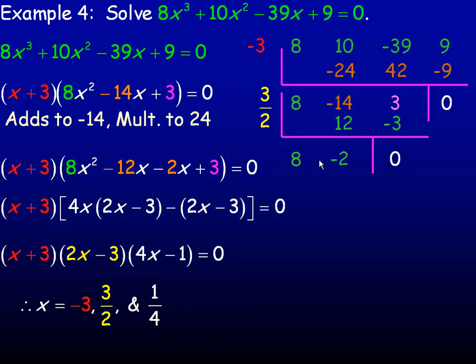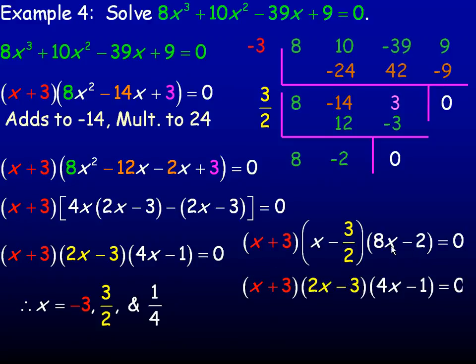So if you had done this instead of this factoring over here, then what you would have got is negative 3 worked, so x + 3 is a factor. 3/2 worked, so x - 3/2 is a factor. And 8 and negative 2 in the bottom means the other factor is 8x - 2. There's a common factor of 2 here, so if we factor the 2 out, that leaves 4x - 1. And multiply the 2 into this binomial, you'll get 2x - 3. Same 3 factors as over here, so same 3 solutions. Just a couple different methods of doing this.